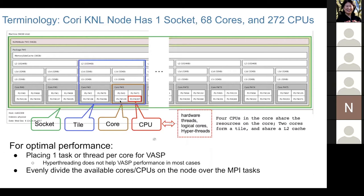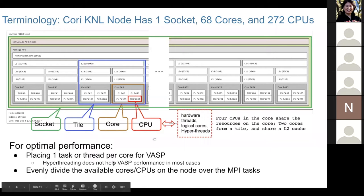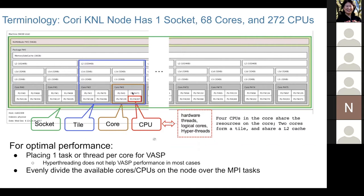One core of KNL contains four CPUs. The CPU here is equivalent to hardware threads, logical cores, or hyper-threads. For optimal performance, we place one task or thread per core for VASP, meaning one task or thread per four CPUs.